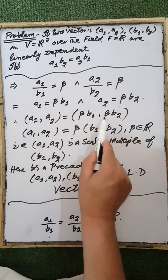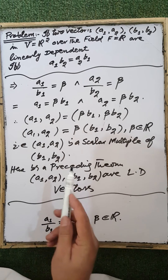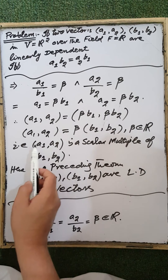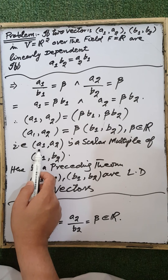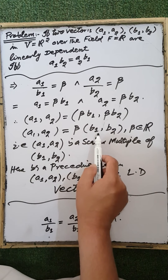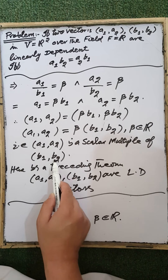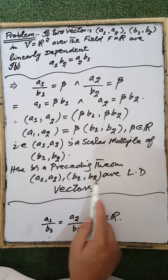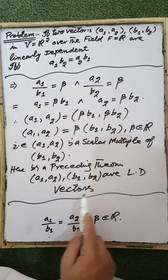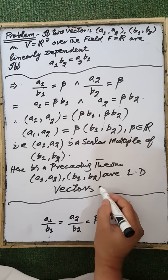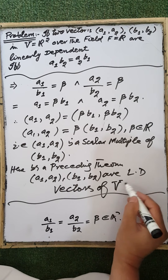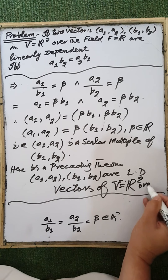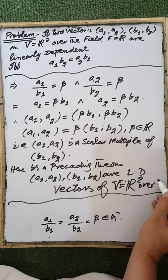Since beta is common in both components, (a1, a2) = beta·(b1, b2). That is, the vector with coordinates (a1, a2) is a scalar multiple of the vector with coordinates (b1, b2). Therefore, by a preceding theorem, these two vectors are linearly dependent vectors of the vector space V = R² over the field R.